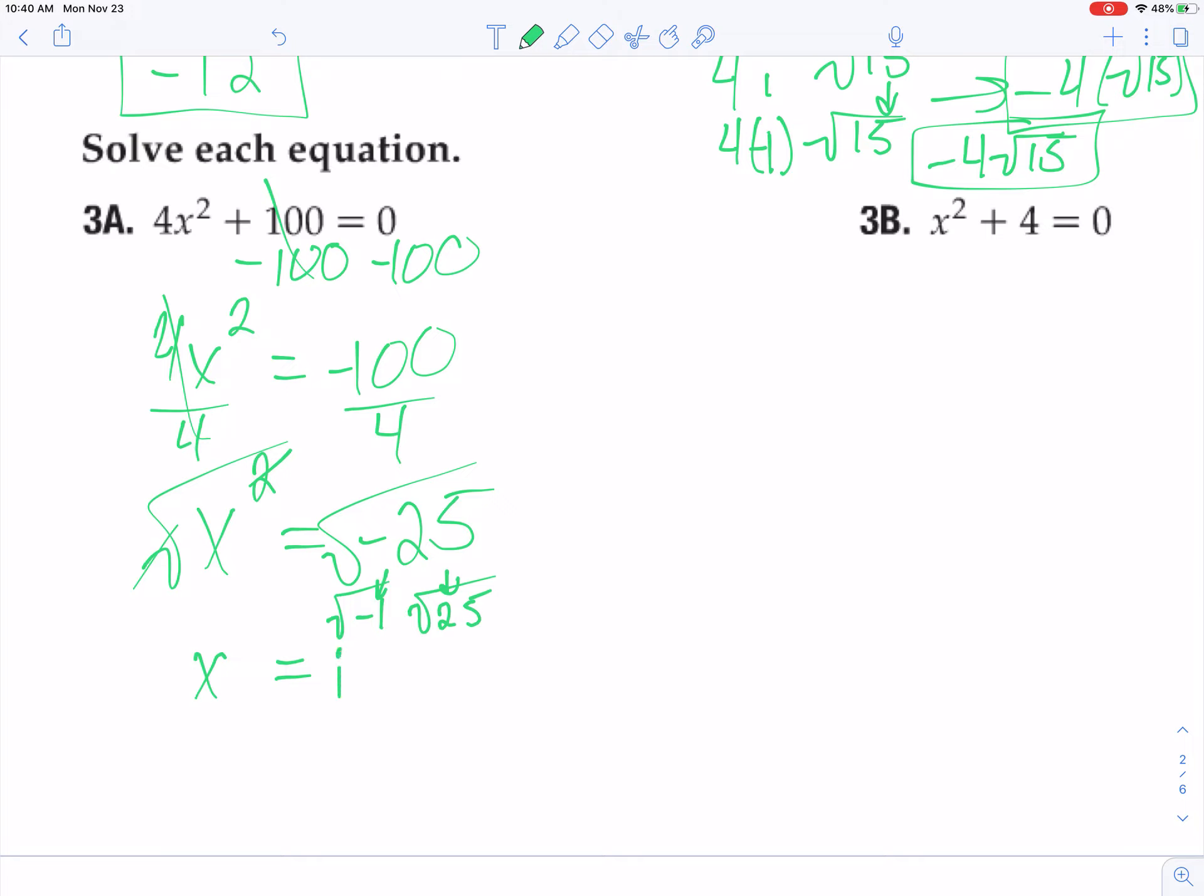So this is going to be i, well hang on a second, 25. Couldn't that have been a positive or negative 5, right? Because negative 5 squared is a positive 25, but positive 5 squared is positive 25. So my answer is going to be x equals the positive or negative 5i.